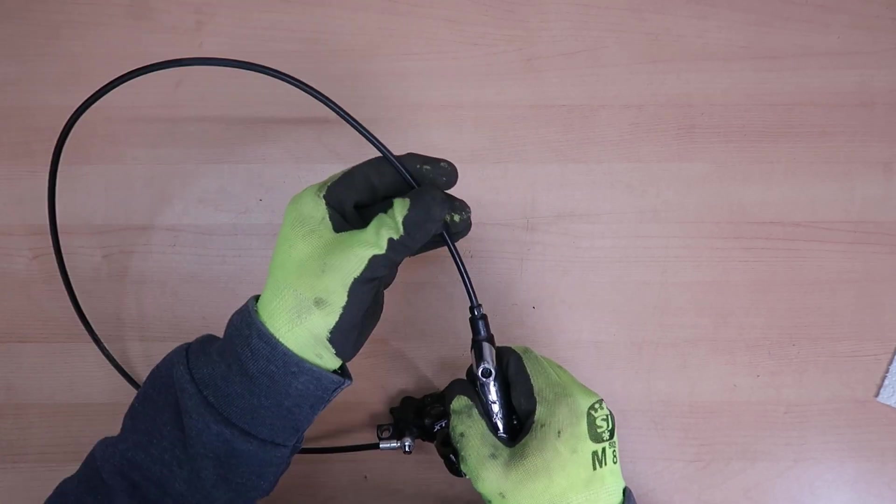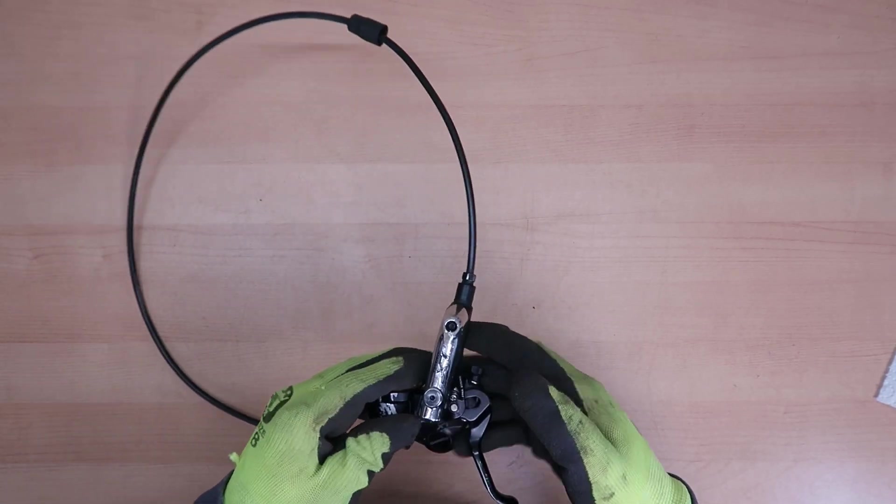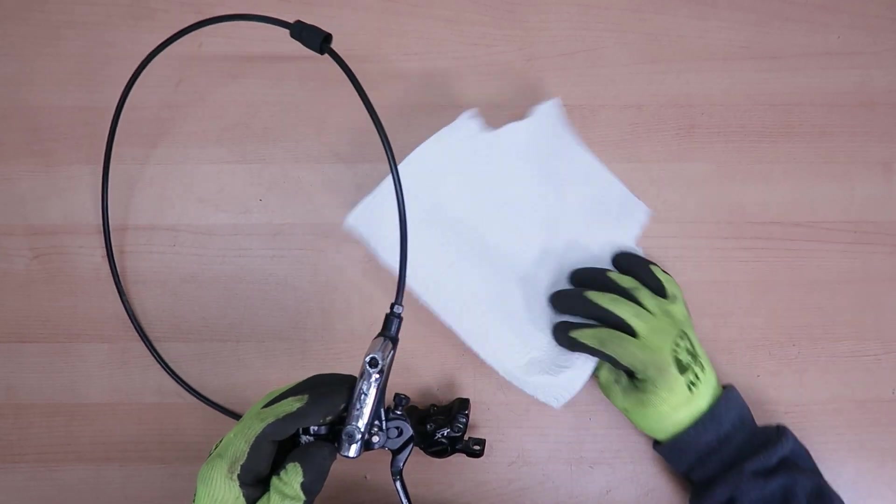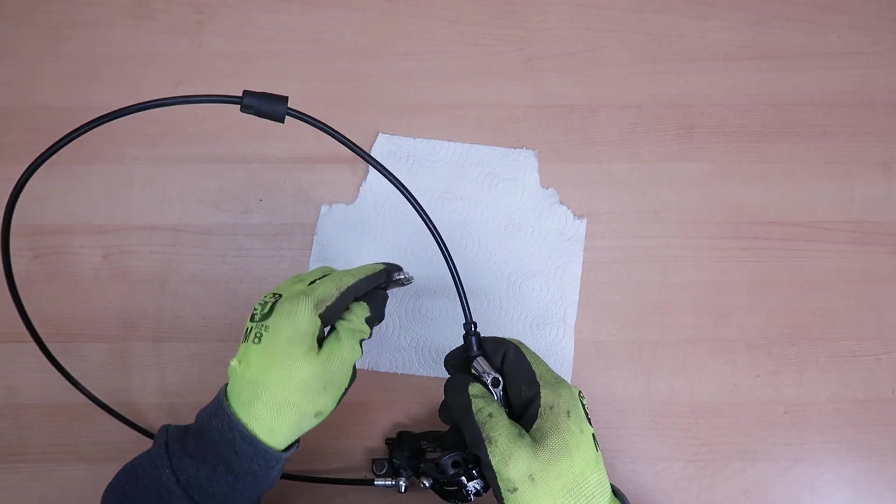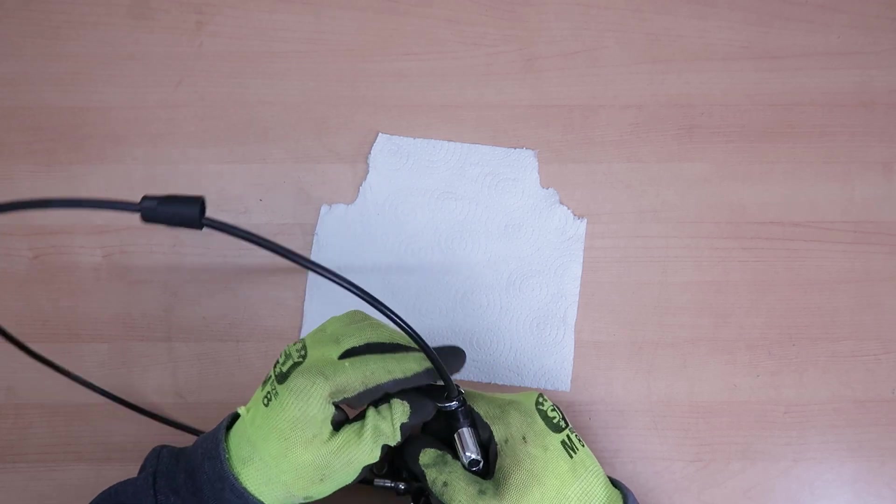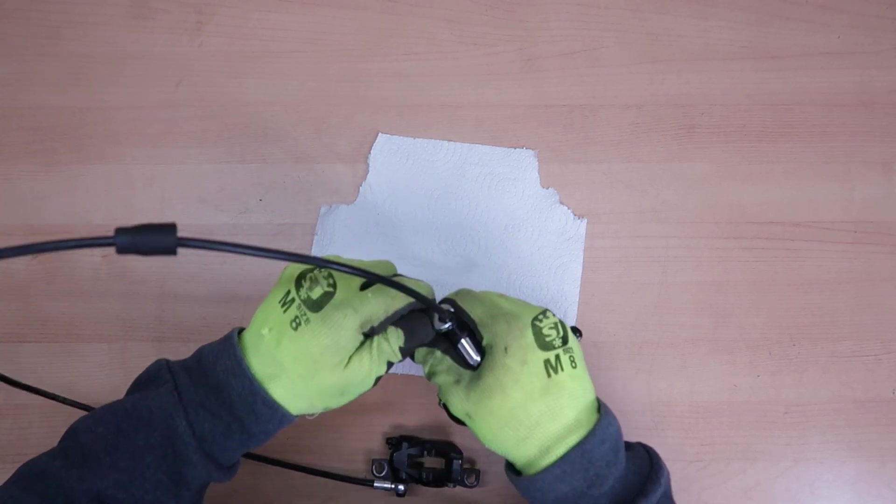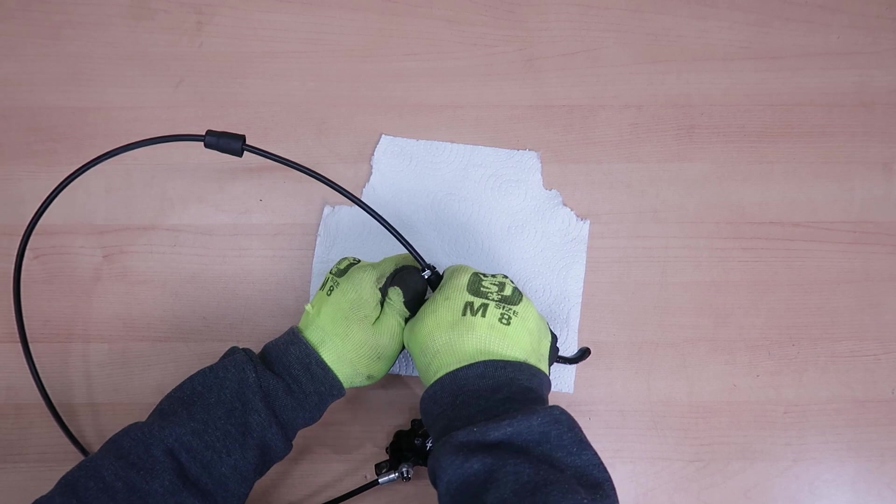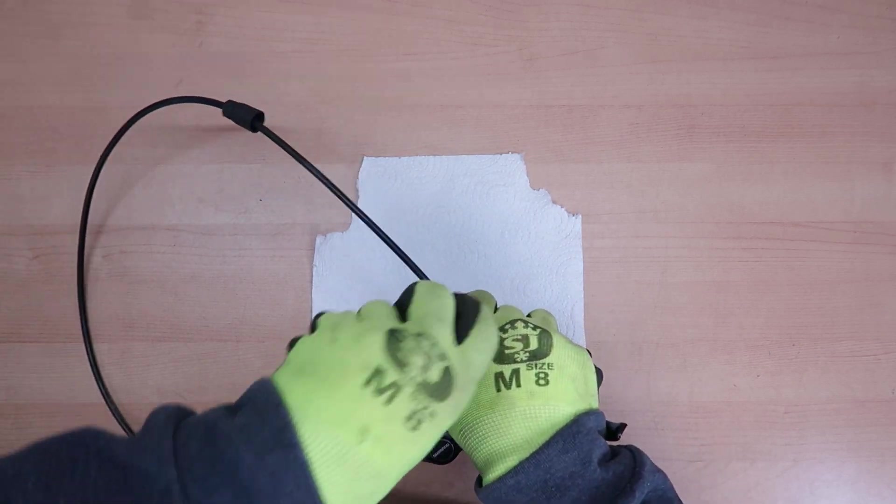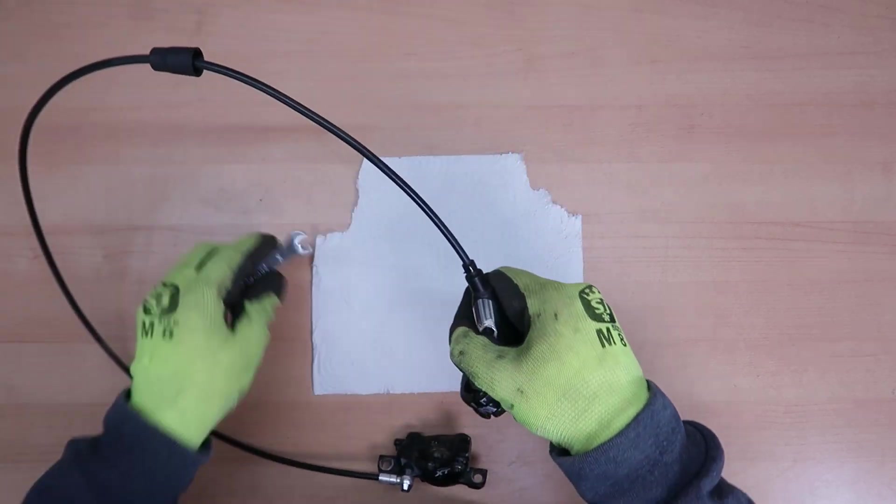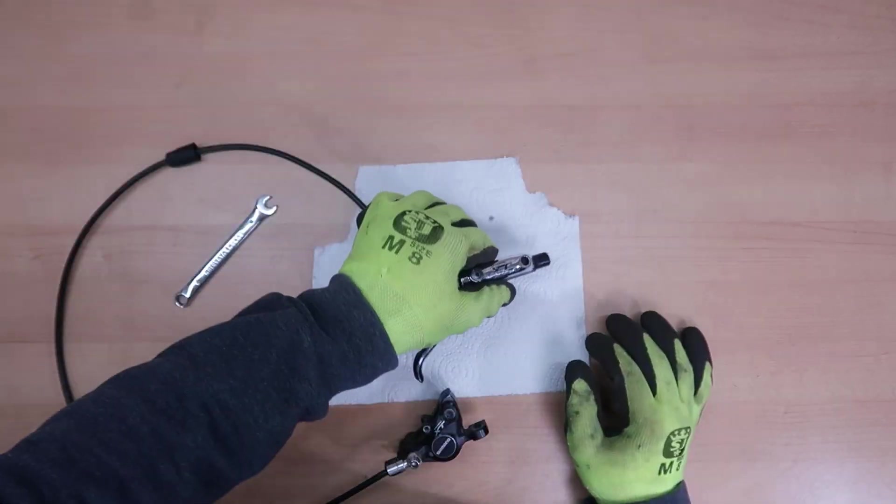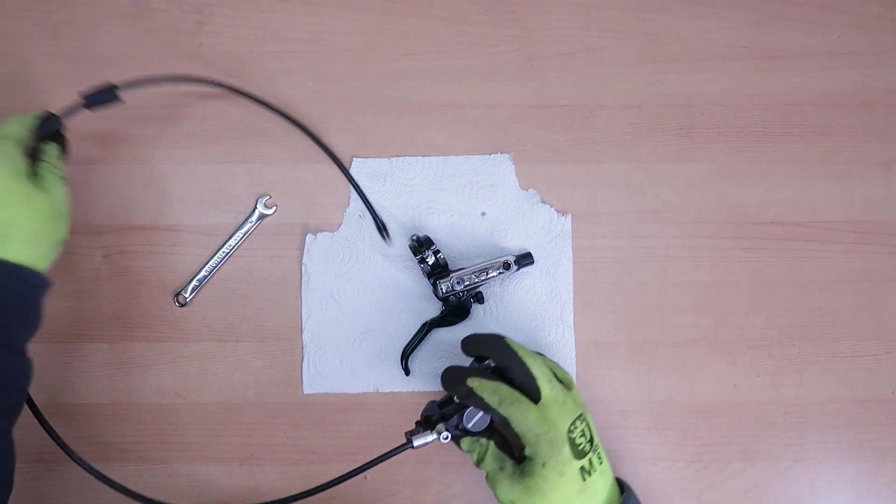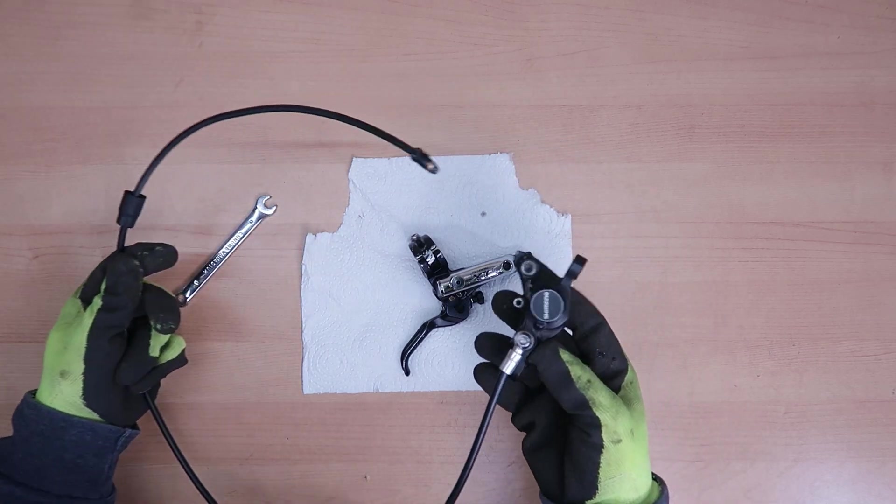First thing I'm going to do is remove the cable from the brake lever. There should be some oil in the system, but I'm going to put this paper towel underneath. So here we need an 8mm spanner and turn this here. Now I'm going to take this aside, we're not going to need it anymore until the end.